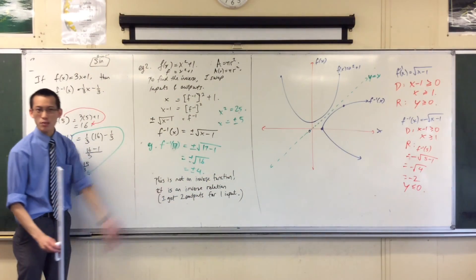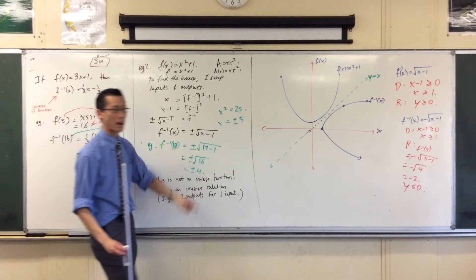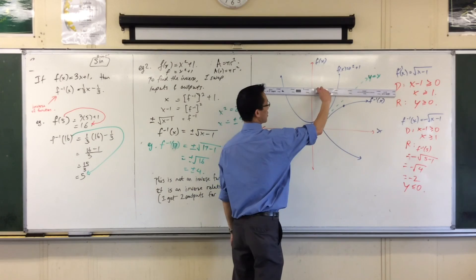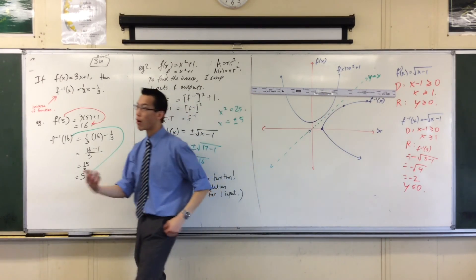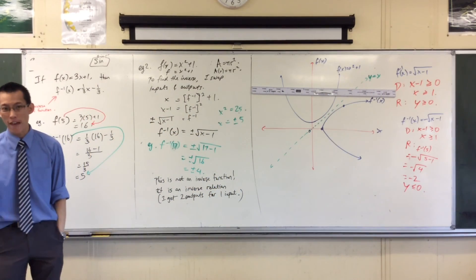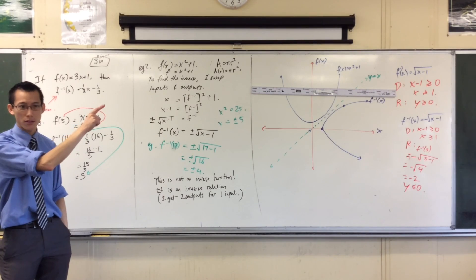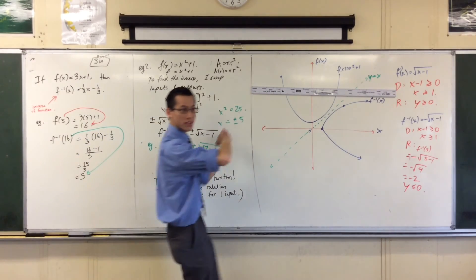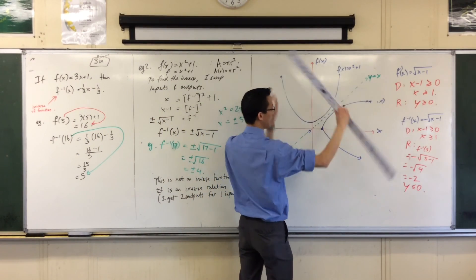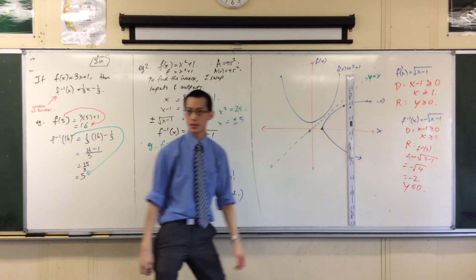So before I did any of this algebra business, I could have looked at the original graph and said, hey, if I put a horizontal line across there, it fails. I have two inputs. So therefore, once I rotate it, of course I'm going to get two outputs.